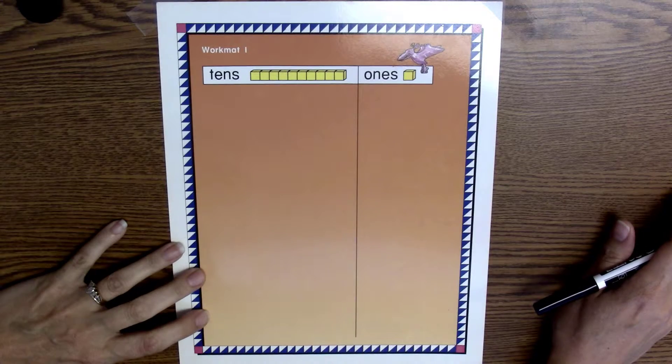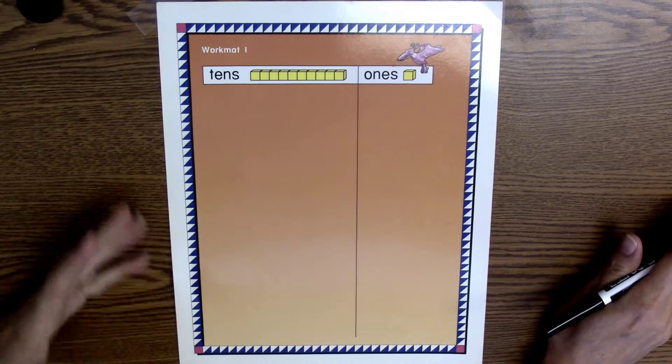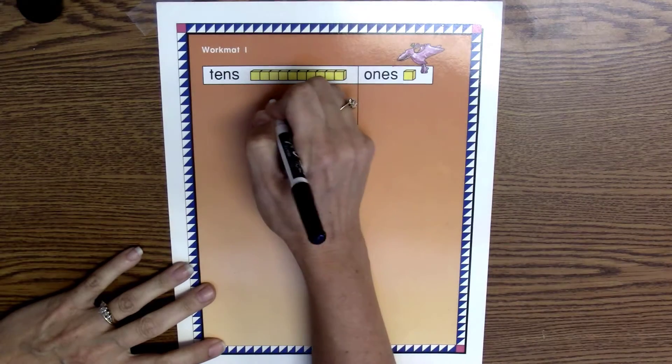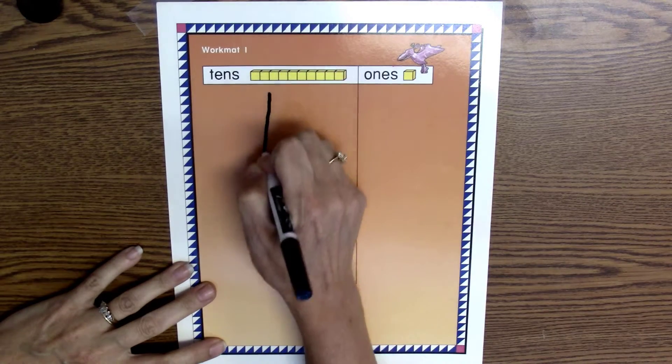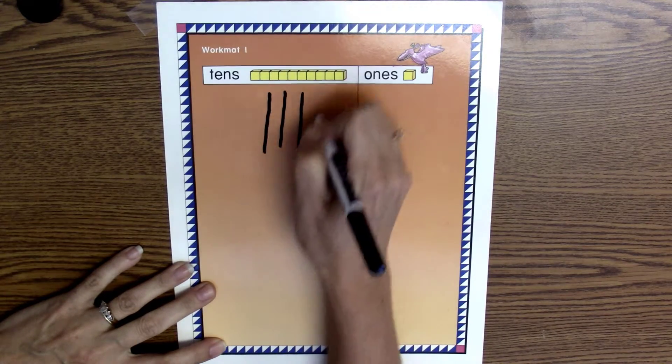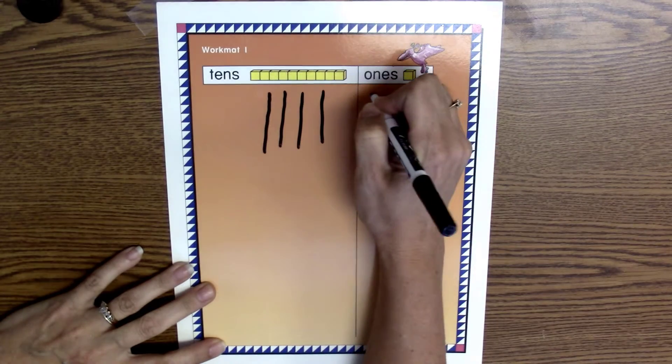Okay, so the first thing I'm going to do is begin drawing my 46 using the base 10 model. So I'm going to draw 4 tens: 10, 20, 30, 40, and then 6 ones.